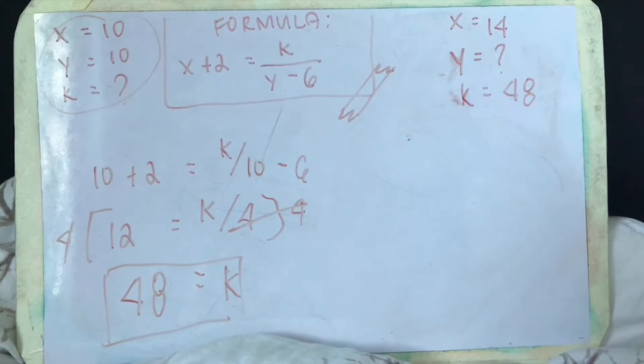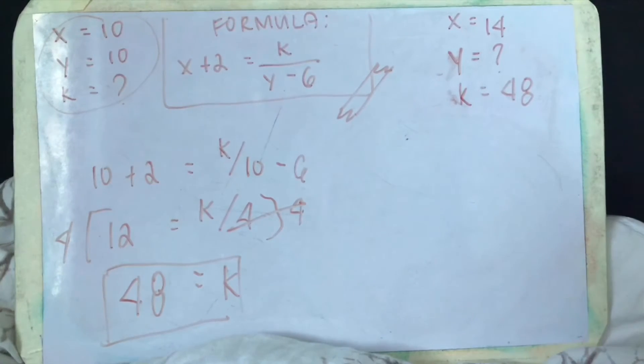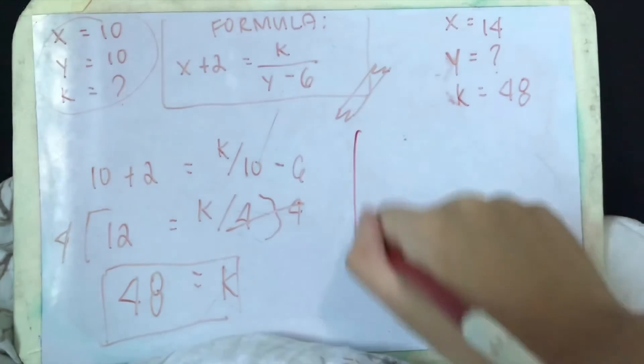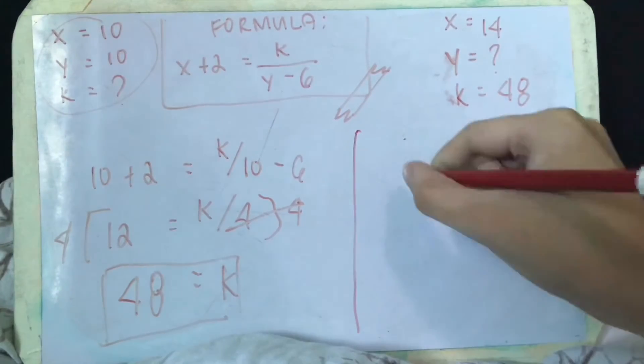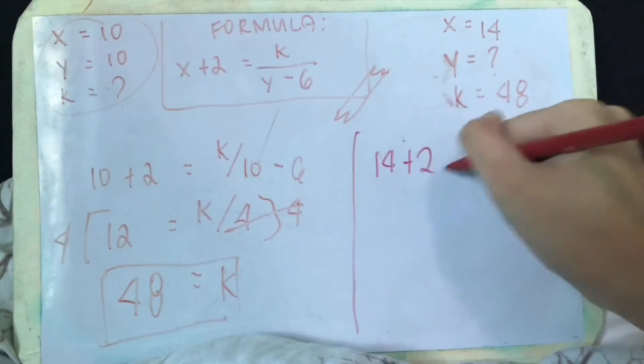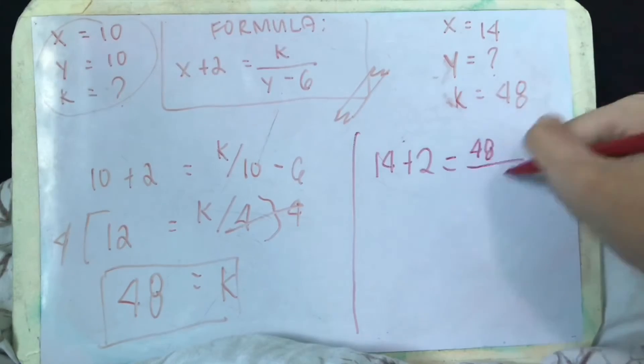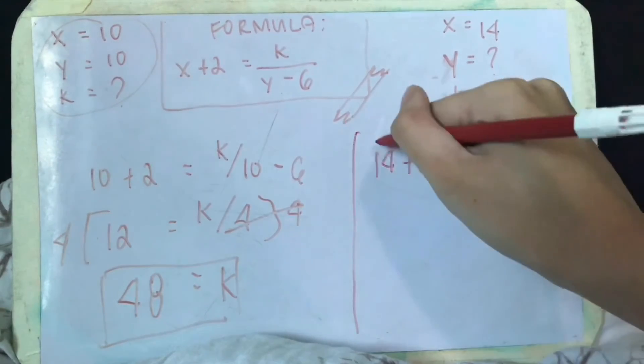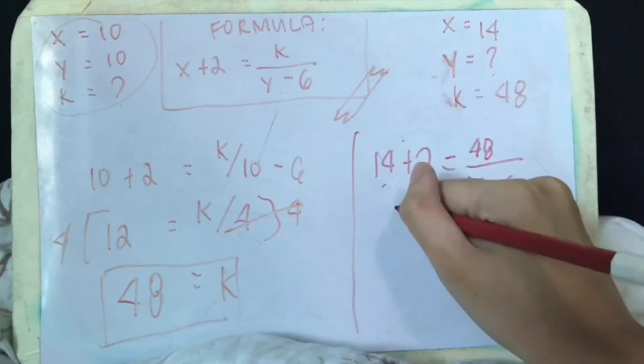So again, let's answer the question. Find the value of y if x is 14. So let's answer what the problem is finding. So 14 plus 2 equals 48 over y minus 6. So 14 plus 2 is 16.